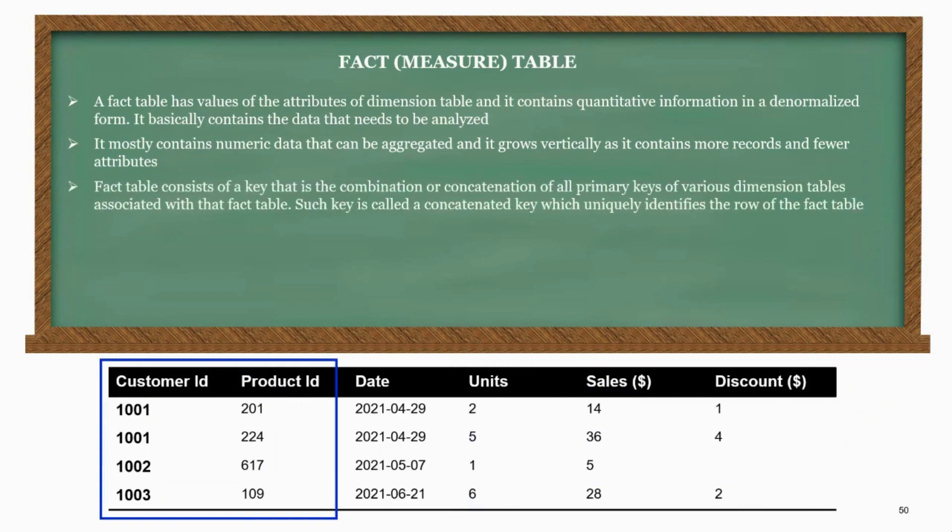Fact table consists of a key that is the combination or concatenation of all primary keys of various dimension tables associated with that fact table. Such key is called a concatenated key which uniquely identifies the row of the fact table.